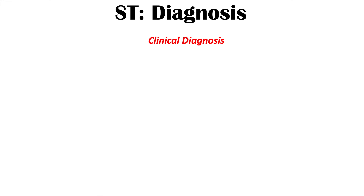Now let's talk about how clinicians diagnose this condition. Oftentimes it's going to be a clinical diagnosis — determined by history and physical examination. If the history contains those causes we talked about, and especially if there is throat pain — if the thyroid gland is tender or very painful to touch — that's going to be very important with regards to diagnosis. But blood work and certain investigations can also be important in determining this is subacute thyroiditis and not some other condition.